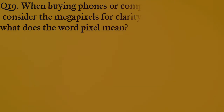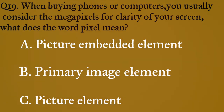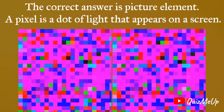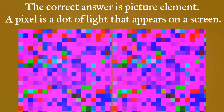Question nineteen: when buying phones or computers, you usually consider the megapixels for clarity of your screen. What does the word pixel mean? A) picture embedded element, B) primary image elements, C) picture elements. The correct answer is picture elements. A pixel is a dot of light that appears on a screen.